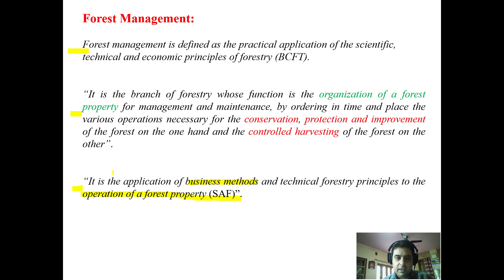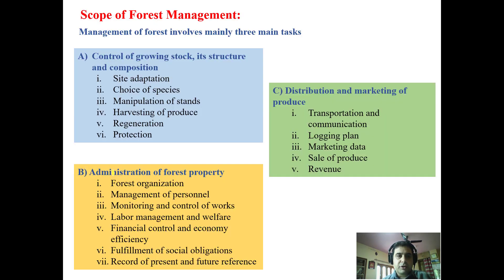Talking about the scope of forest management, it mainly involves three tasks. The first is control of growing stock, its structure and its composition. The second is administration of the forest property. And the third is the distribution and marketing of forest produce.